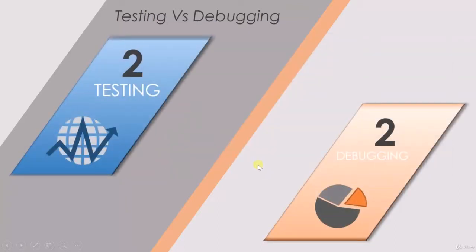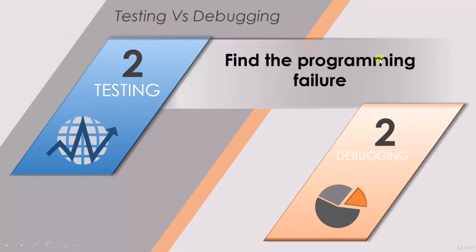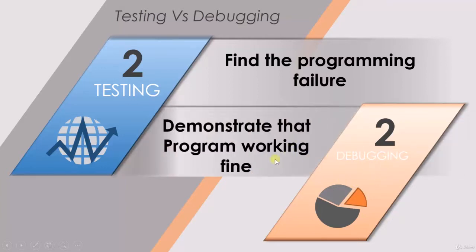Coming to the second point: in testing we find the programming failures. That is the activity we do in testing — we find the failure with respect to the code or software. Whereas in debugging, what we do is we demonstrate that the program works fine.